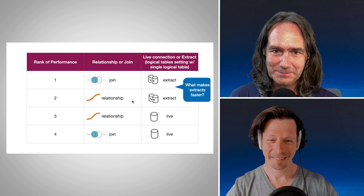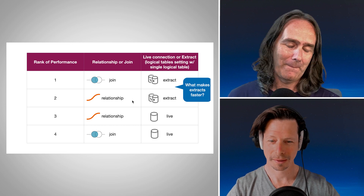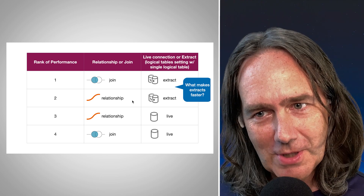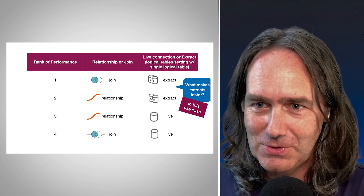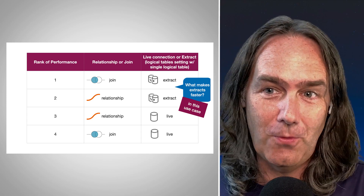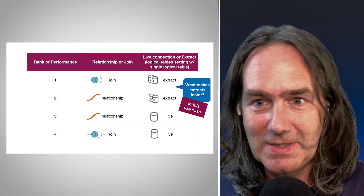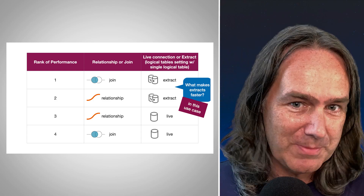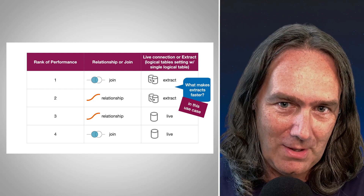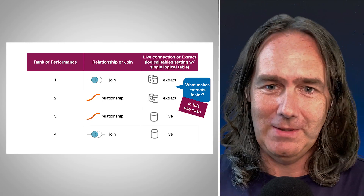Joins have been sandwiched — they're either the fastest or the slowest, and relationships are in the middle. To be clear, this is for this specific use case. Depending on your data source and other factors, you may experience something different, but understanding why this happens here can hopefully illuminate other use cases. Every topology is going to be a little bit unique.